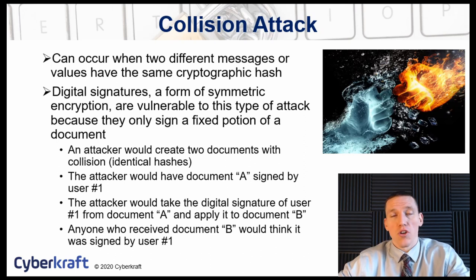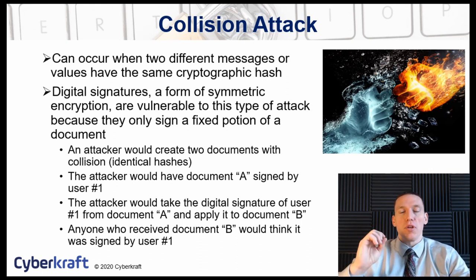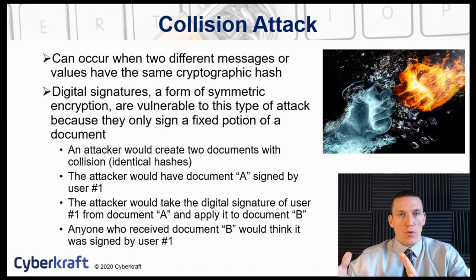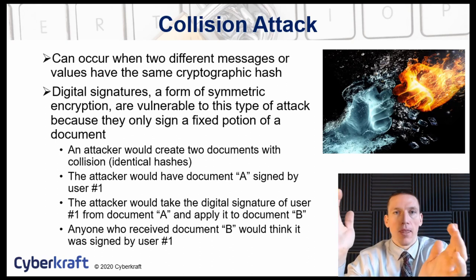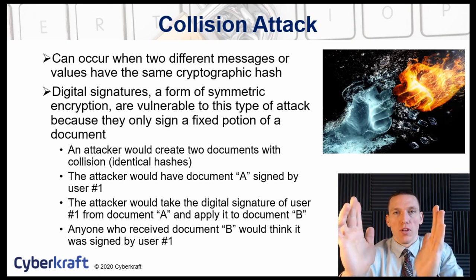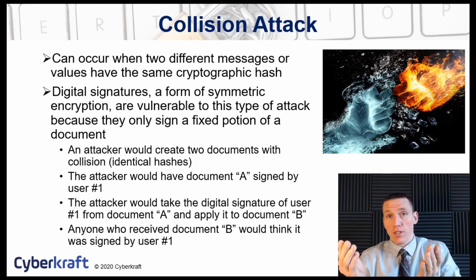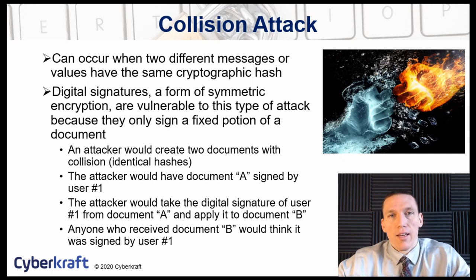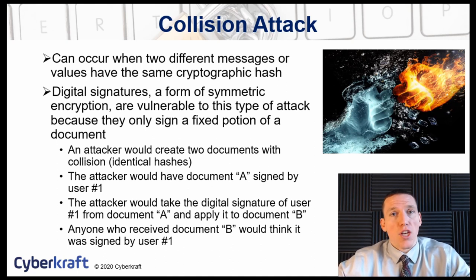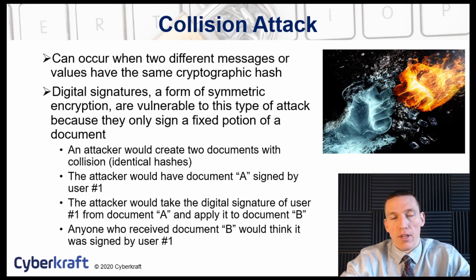A collision attack occurs when two different messages have the same cryptographic hash. Once encryption is applied, the message produces a cryptographic hash — the scrambled portion of the data. It's possible for two completely different messages to share the same cryptographic hash. Some encryption algorithms are more susceptible to this, usually with weak initialization vectors, like 802.11 that was discussed previously.